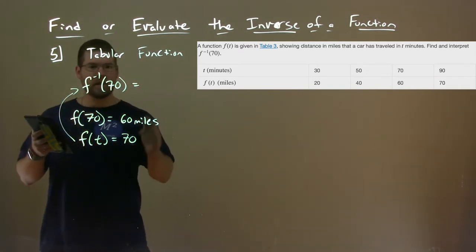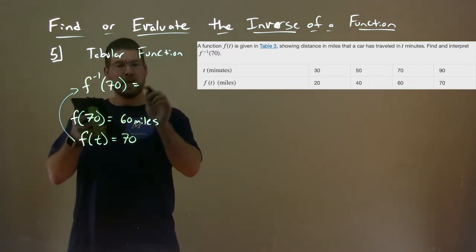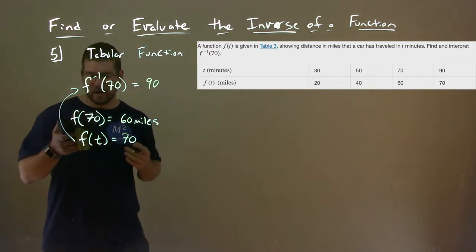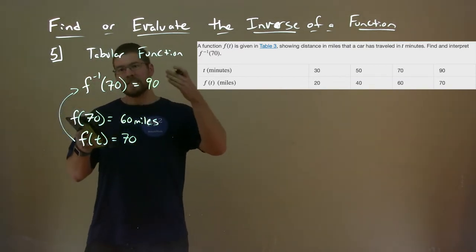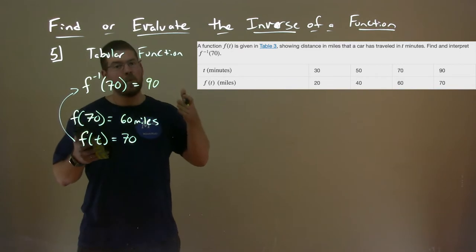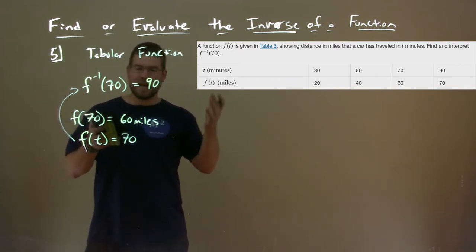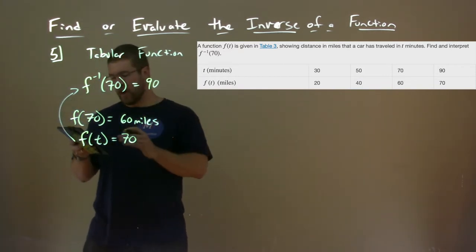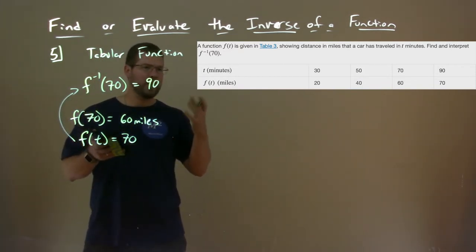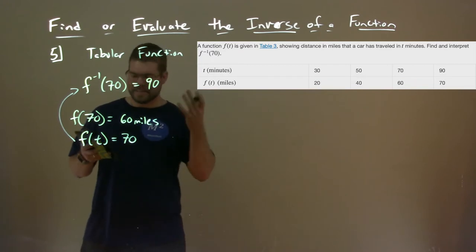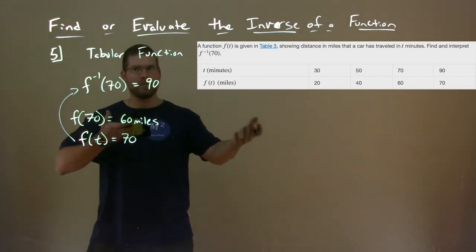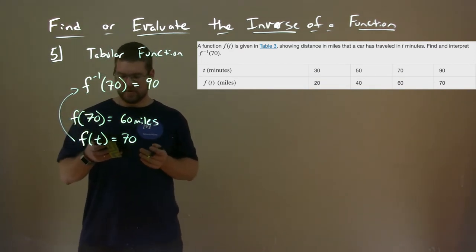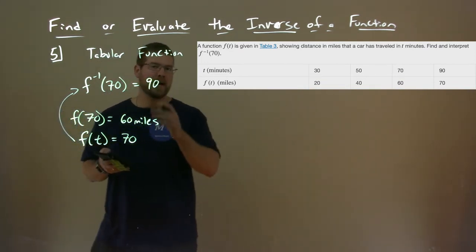So what does that mean? Well, when the output's 70, the input is 90. So what it's telling us here is the f inverse of 70 equals 90. That after traveling 70 miles, we would have been traveling for 90 minutes. So after 70 miles of driving, we would have been in a car traveling for 90 minutes. And that's the relationship here in tabular form of our function and its inverse.